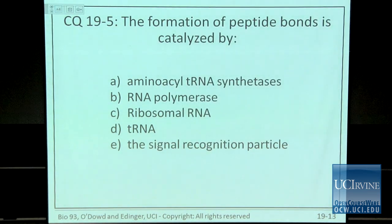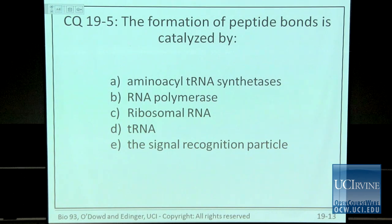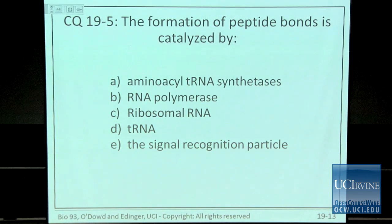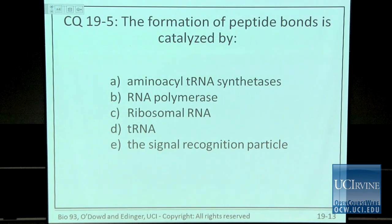Aminoacyl-tRNA synthetases — the 'ase' suffix means enzyme, and 'synthetase' means it synthesizes something: aminoacylated tRNAs. RNA polymerase forms phosphodiester bonds — it's an enzyme that makes polymers of RNA nucleotides. Ribosomal RNA is the right answer for peptide bond catalysis. Is tRNA an enzyme? No — it has no enzymatic function. It's a courier that brings amino acids to the ribosome and doesn't catalyze a reaction. The ribosomal RNA is the enzyme here.